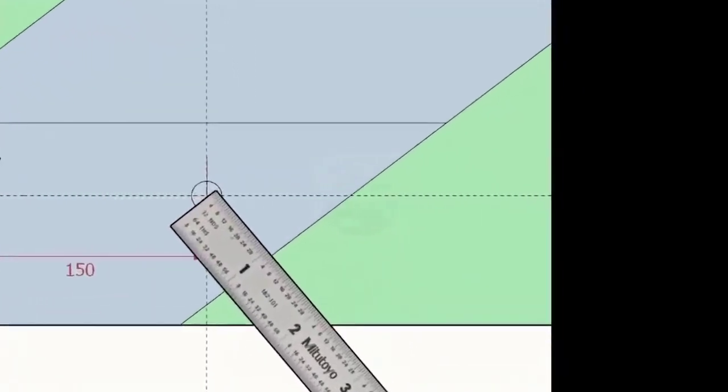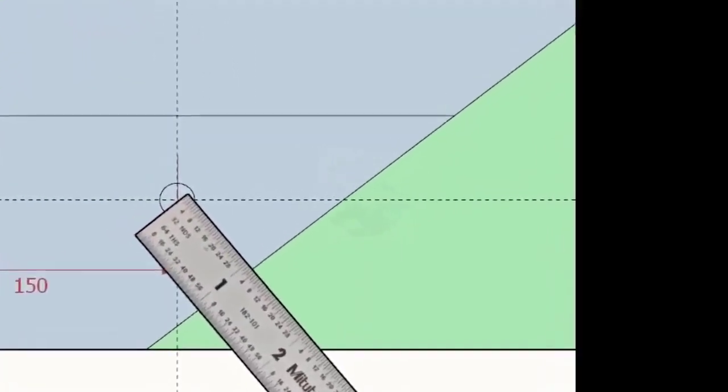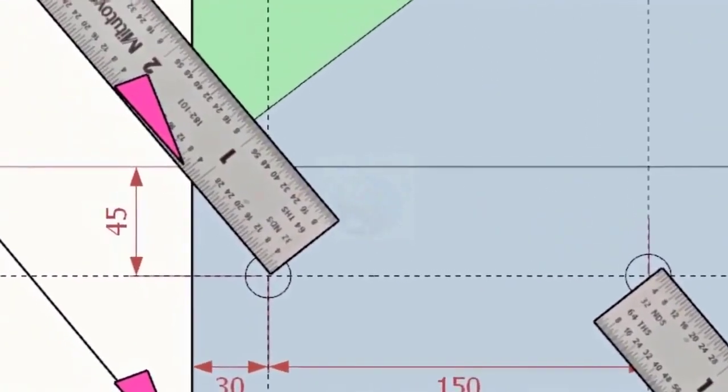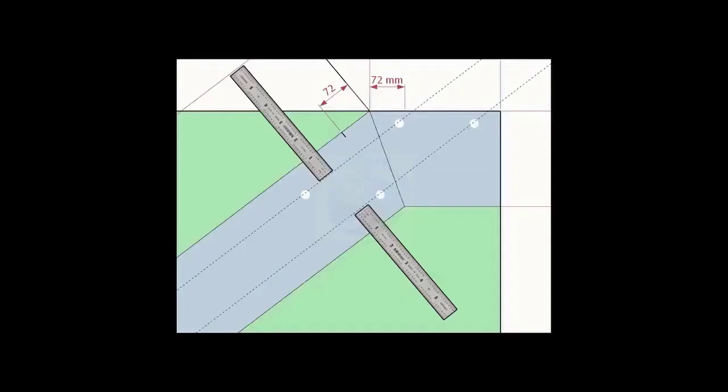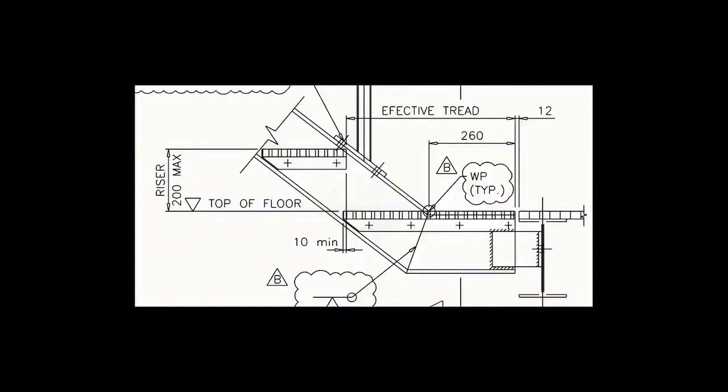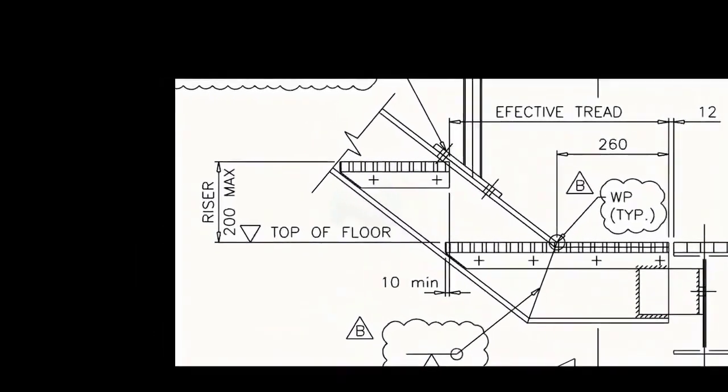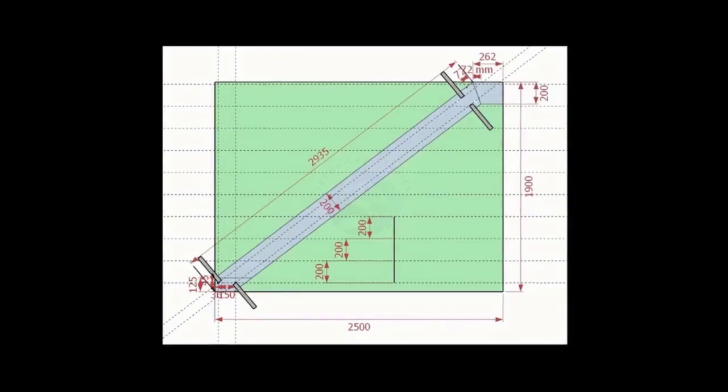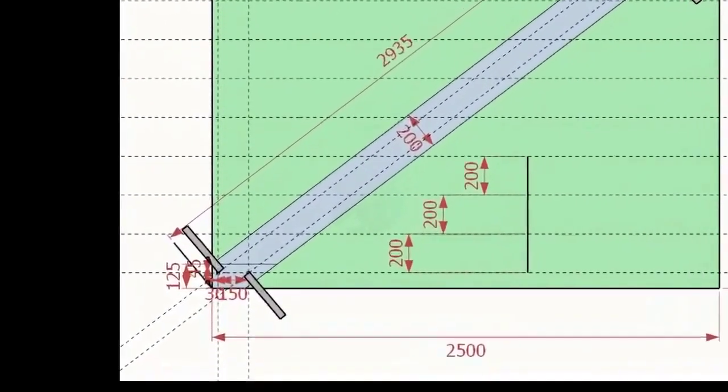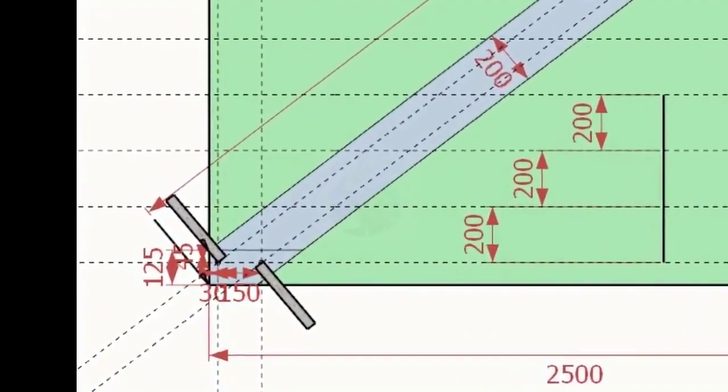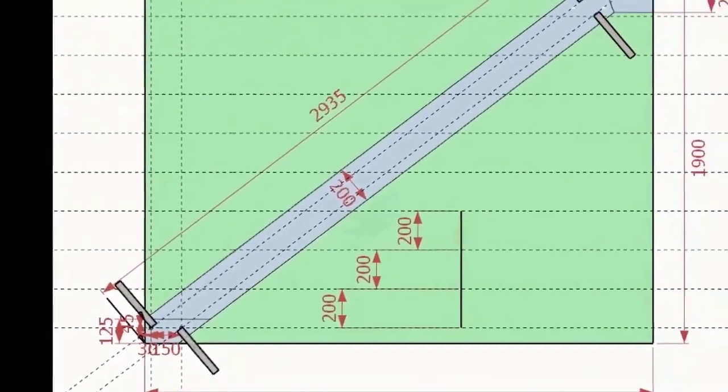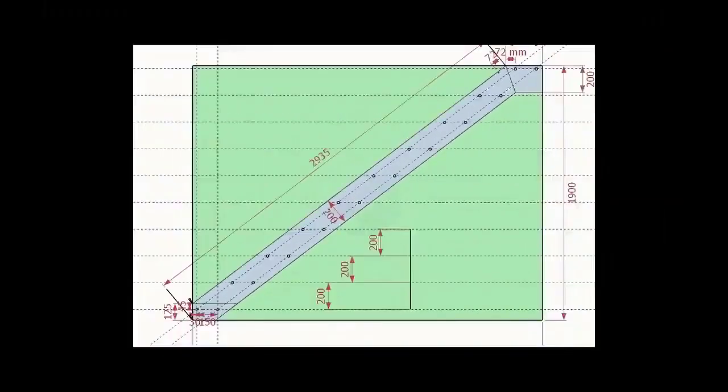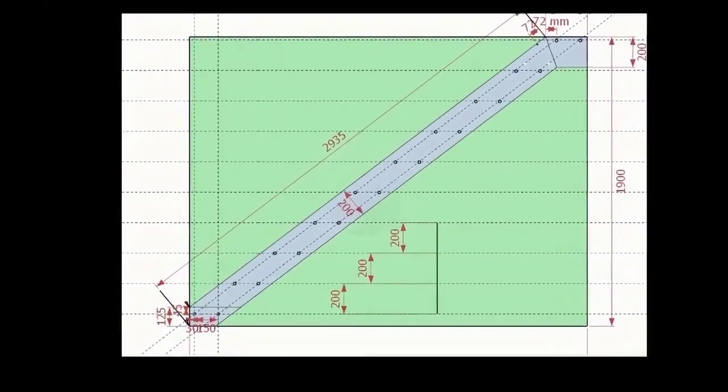Note down the distance from the edge of the layout and the hole center on both sides. Transfer the distance to the other end and draw lines. As per the drawing, the rise between two adjacent steps is 200 millimeters. Draw parallel lines of 200 millimeters pitch to the entire height of the stairway. Each intersection point is a bolt hole center.